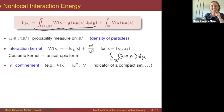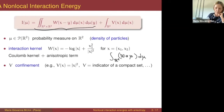The function W, the interaction kernel, has a very specific structure coming from dislocation theory. It's given by the two-dimensional Coulomb kernel — which is minus the logarithm — plus an anisotropic term.